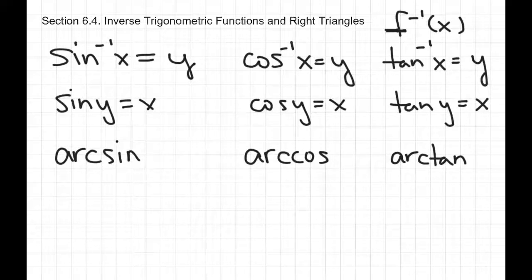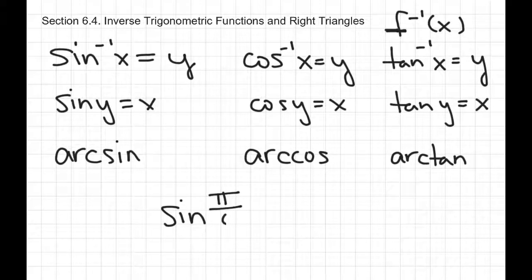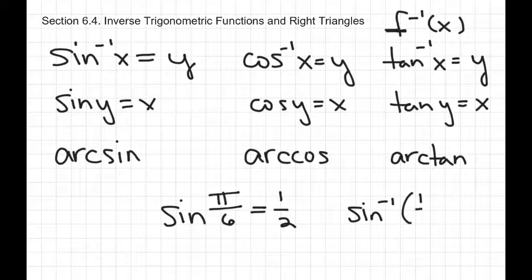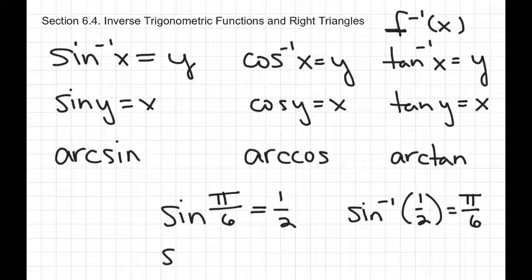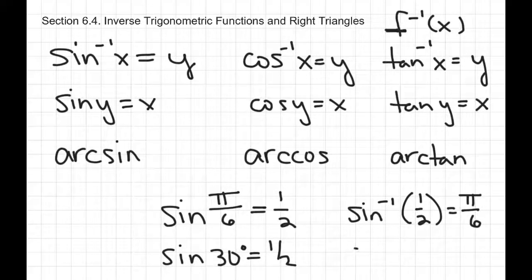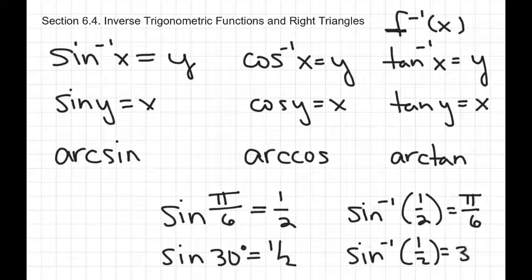How does an inverse trig function work? Well, if you know that the sine of pi over 6 is 1/2, then the inverse sine of 1/2 must be pi over 6. The same works whether you're in radians or degrees. If the sine of 30 degrees is 1/2 — because pi over 6 is 30 degrees — then the inverse sine of 1/2 can also be said to be 30 degrees.